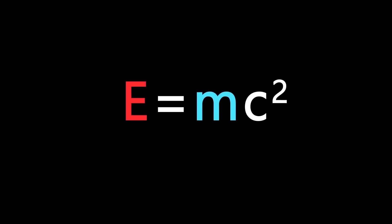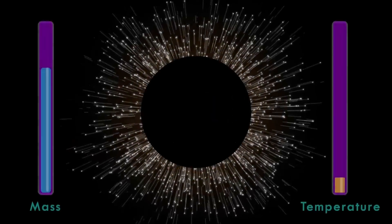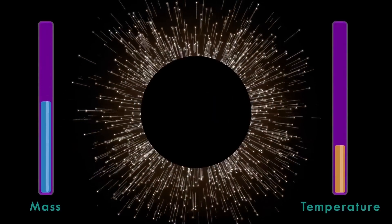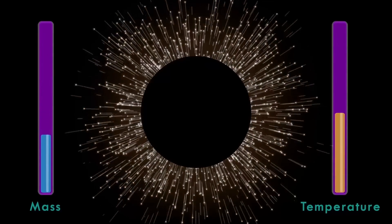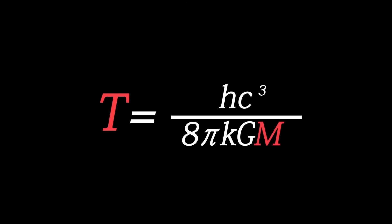At a very slow rate, as energy is taken from the black hole, it loses its mass, because E equals mc squared, which implies energy is proportional to mass. And as its mass decreases, its temperature increases, due to this equation.